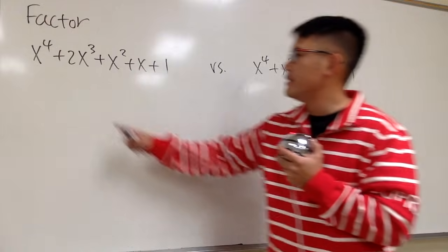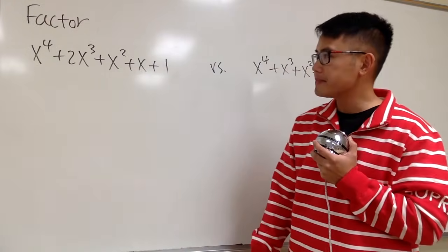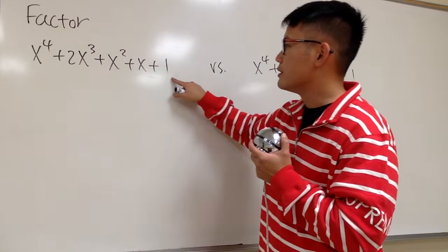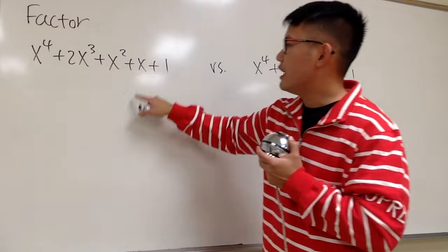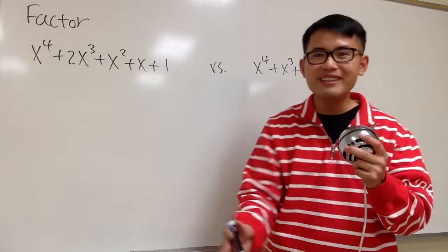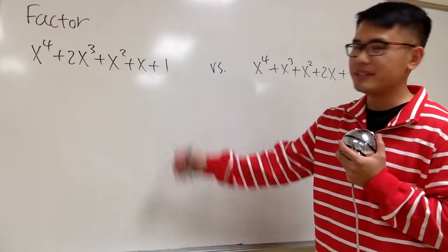This right here, we have 5 terms. And we have a few ways to group them. Maybe you can group the first two together, and then the second three like this. Or the first three like this, and then the last two like that. And we just have to try it, and I just mentioned it, it's going to be hard. Let's look at this and let's think about this carefully.